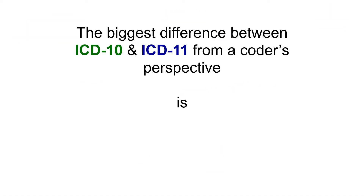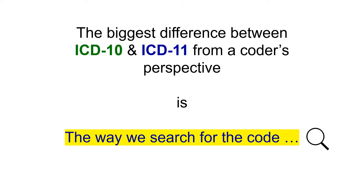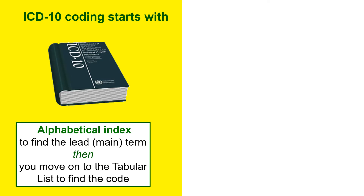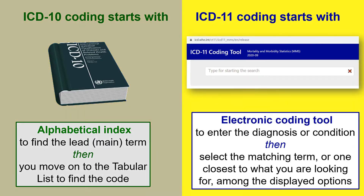The biggest difference between ICD-10 and ICD-11 from a coder's perspective is the way we search for the code. ICD-10 was based on books — we looked up the lead term in the alphabetical index, then moved to the tabular list to find the code. ICD-11 is fully electronic, based on using the ICD-11 coding tool, which is like a search engine where you type in your diagnosis or condition and select from the displayed options.